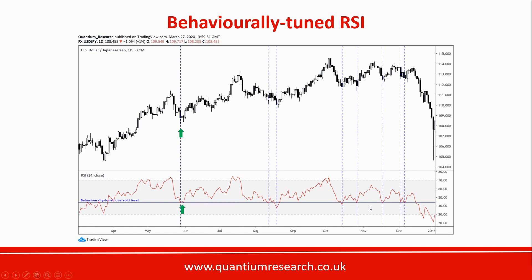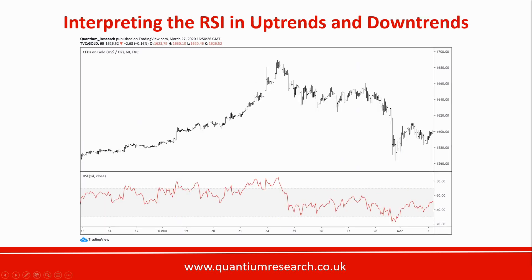Note that if you were using the default oversold level of 30, you didn't get a single buy signal in this uptrend and would have missed all of these significant signals. You have to tune the RSI because it behaves differently under different market conditions. In an uptrend, for example, the RSI oscillates roughly in the range from about 50 to 80, and we get bullish signals when the RSI comes down to test the 50 level — not anywhere near that default 30.